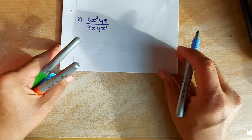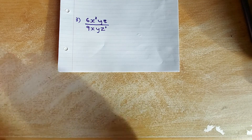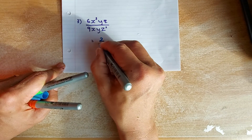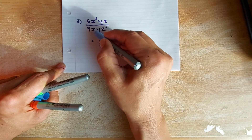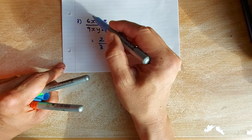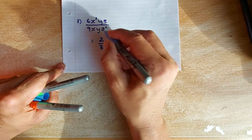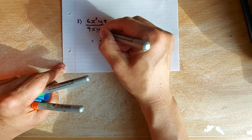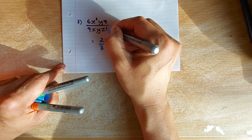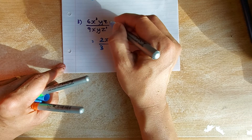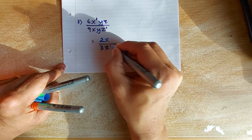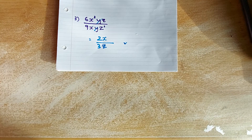Same for division. Number with number — put in your calculator: 6 over 9 is 2 over 3. For x squared over x, when you multiply you add the power, when you divide you take away the power, so 2 minus 1 gives x on top. Y and y cancel out, so there's nothing left. Z and z squared: 1 z on top and 2 z at the bottom, so 1 minus 2 gives z at the bottom. That's the third mark.